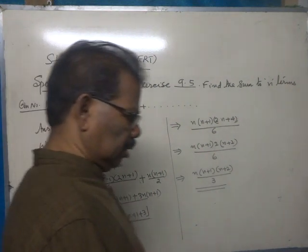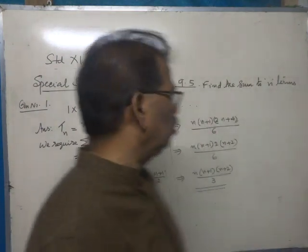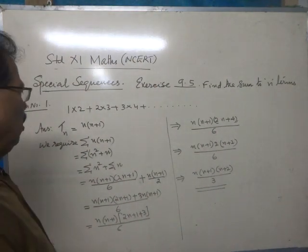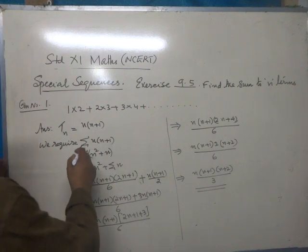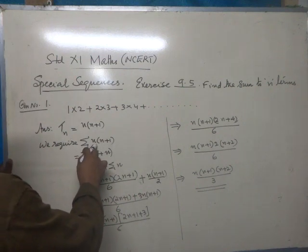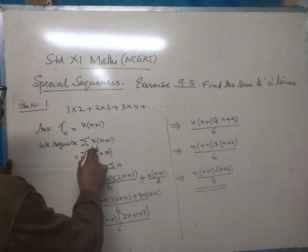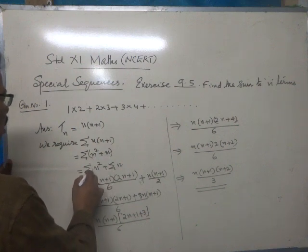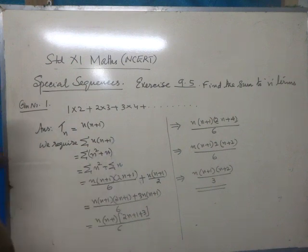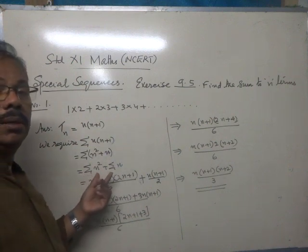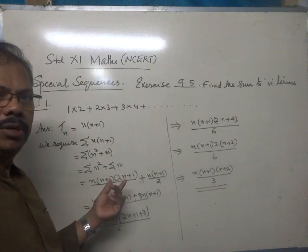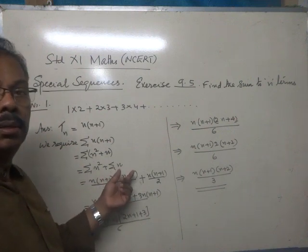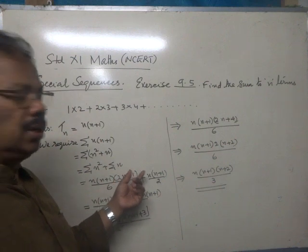We require the sum of those terms. We require Σn(n+1), that is Σ(n²+n). n(n+1) means n²+n, so Σn² + Σn. By Σn², we mean sum of the squares of the first n natural numbers. By Σn, we mean sum of the first n natural numbers.